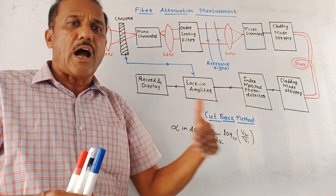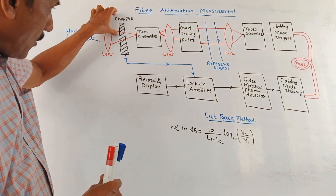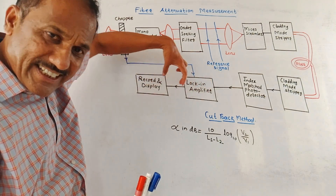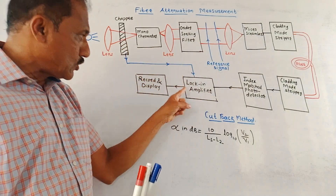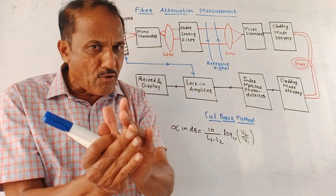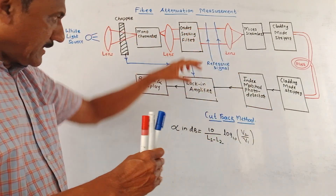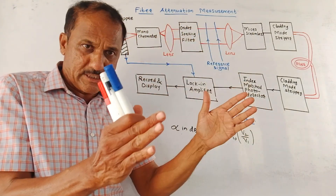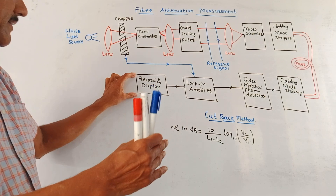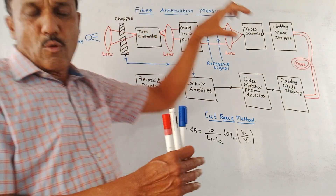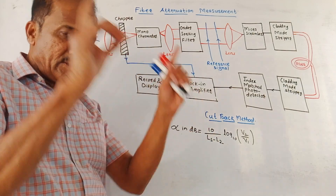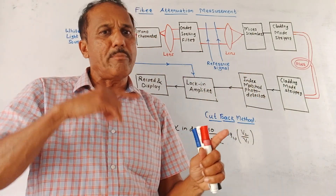Chopping means making the signal on and off because we want a stable reading. We don't want any variations in the output reading, so this chopper is used. The output of the chopper is also applied to the lock-in amplifier. By choosing the proper frequency for making the incoming light signals on and off, this signal is applied to the lock-in amplifier, which locks the incoming signal and accordingly the result is recorded and displayed. Then we are making use of a monochromator — 'chroma' means color and 'mono' means single — so this block selects a particular single wavelength for which we want to make the measurement.